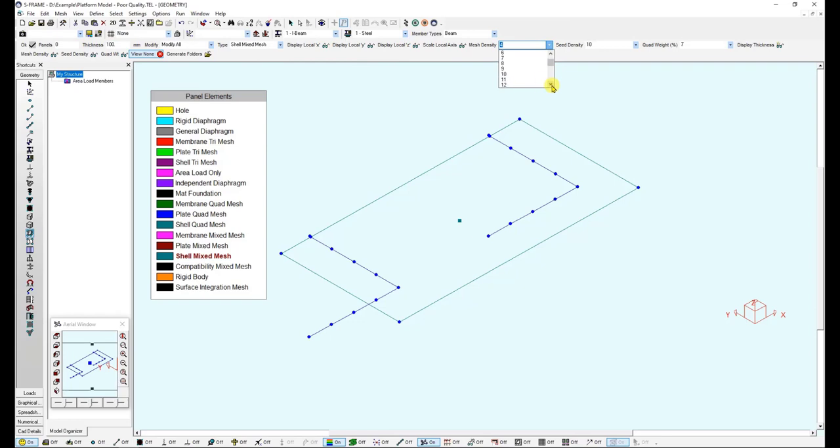I am just going to specify the same thickness and change these mesh parameters. Maybe I can increase my mesh density. The Seed Density I will decrease it to 2, and the Quad Weight, I am just going to increase the presence of Quadrilateral Elements by 80%.